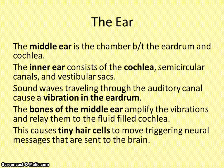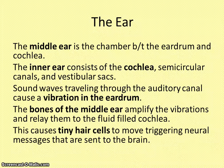The middle ear transmits the vibrations through three bones, which are known as the hammer, anvil, and stirrup. Once those vibrations go through the three bones, they are sent to the cochlea, which has a membrane on it and is located in the inner ear. The vibrations from the three bones cause the cochlea to vibrate, and it fills up with fluid.